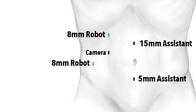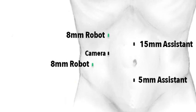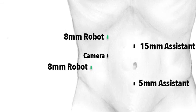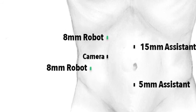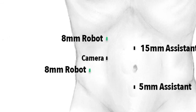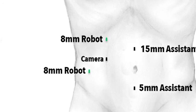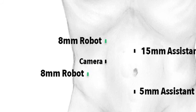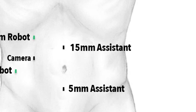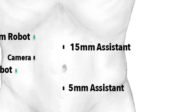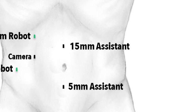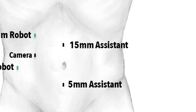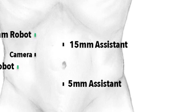Trocar placement is demonstrated with the camera port shifted laterally, with bariatric robotic trocars placed at least 8 centimeters apart to help minimize robotic arm collisions and maximize the working space for the bedside assistant. A 15-millimeter and 5-millimeter assistant port are placed in the midline, midway between the umbilicus and xiphoid and infra-umbilically.